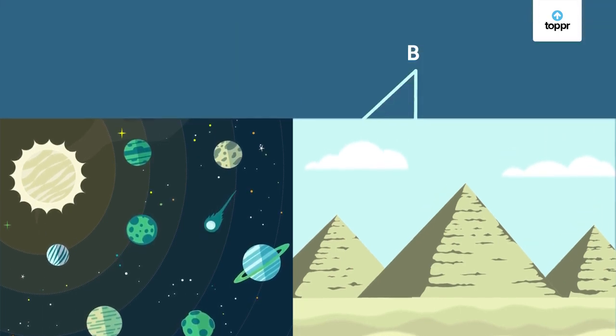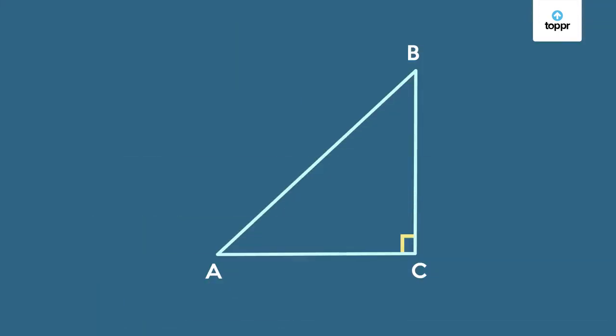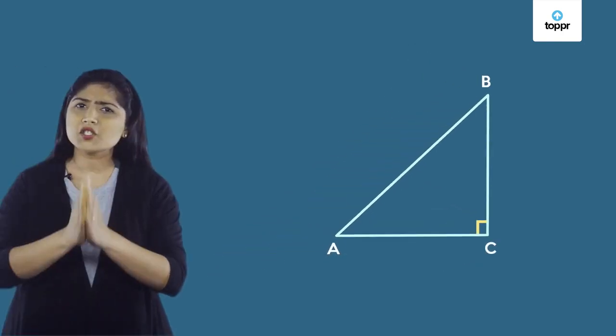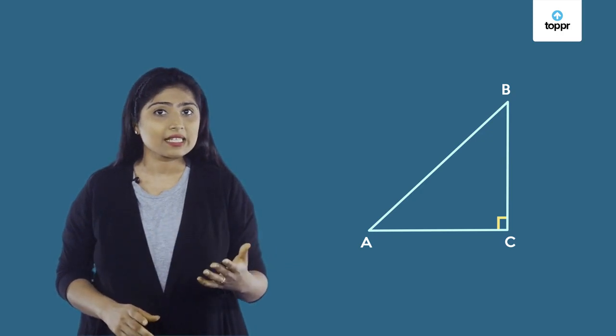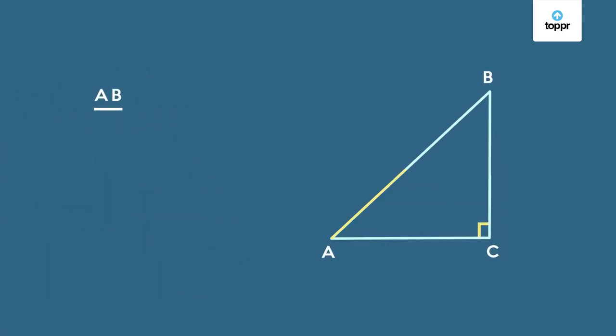Now to begin learning about trigonometry, we will focus on a right-angled triangle again. As you might have guessed, we are interested in the ratios of side lengths. For example, AB by AC. So how many different ratios can you write using these three side lengths?